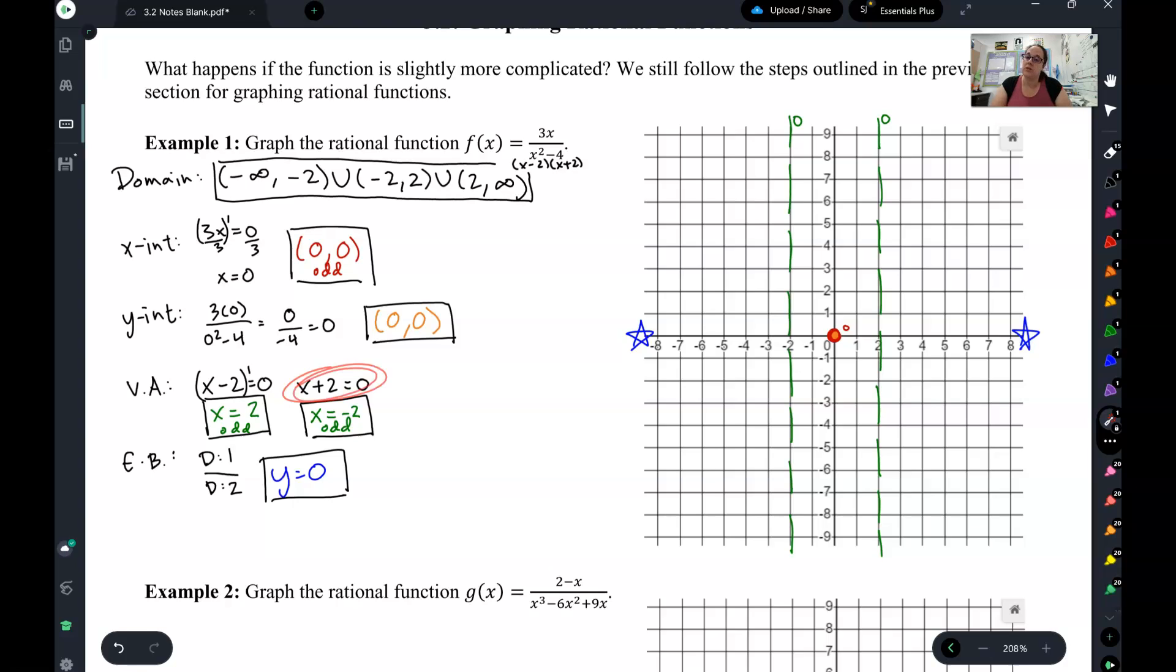And I took the x plus 2, set it equal to 0 to get x equals negative 2, which is odd. And notice I graphed those over here, and I did little o's at the top because they're both odd.